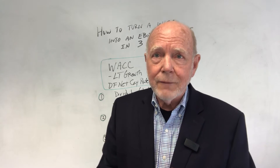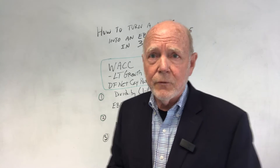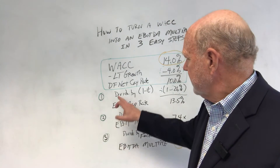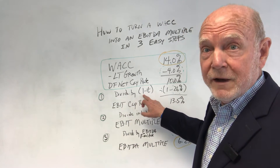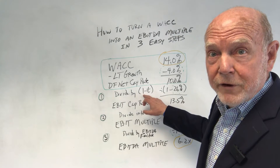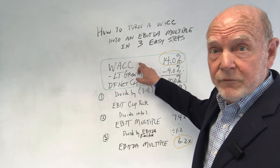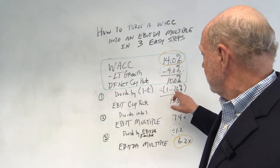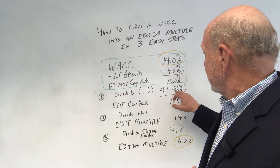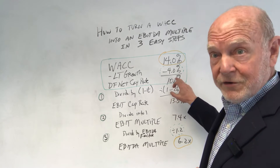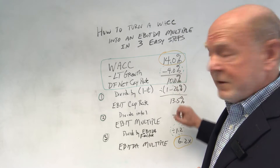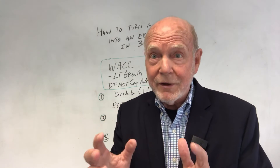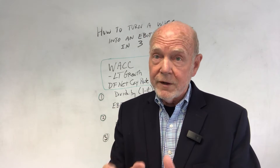I don't know about you, but I have no frame of reference for a debt-free net income or net cash flow capitalization rate. So we want to do something with it — let's do this in three easy steps. Step one: we divide by one minus the tax rate. You've already assumed the tax rate in the development of your WACC, so you've already got it. In this case, twenty-six percent. One minus twenty-six percent divided into the ten percent debt-free cap rate gives us thirteen and a half percent — a pre-tax debt-free capitalization rate.